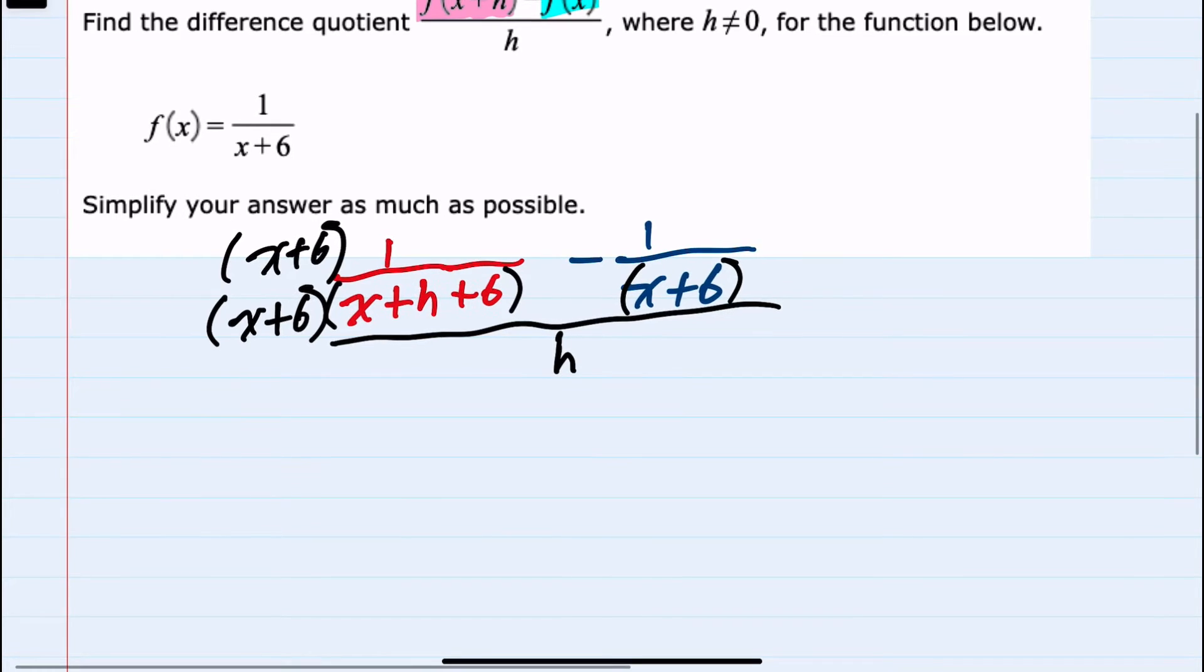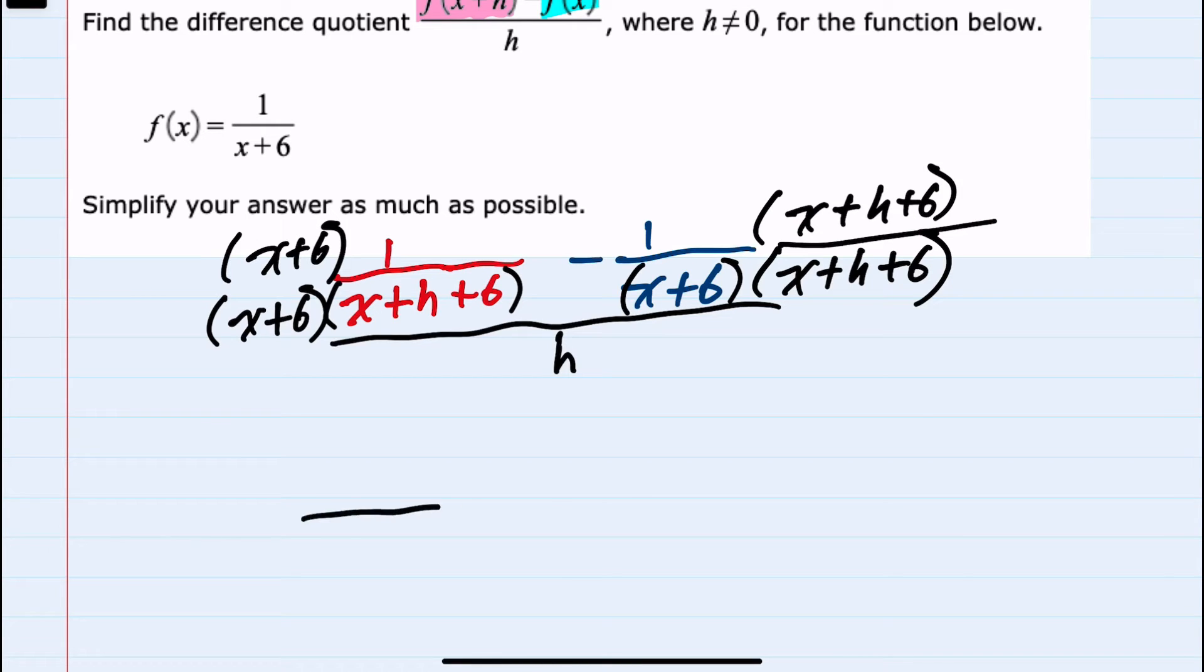On the right hand fraction I would need the x plus h plus 6, again multiplying the numerator and the denominator. That will give me my new denominator in the top of x plus 6 times x plus h plus 6. I still have the other h in the bottom, but now in the numerator of the top from the left hand side I have just x plus 6 times 1, so that will be x plus 6.